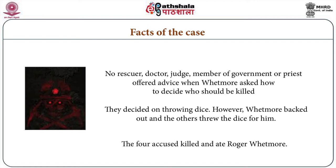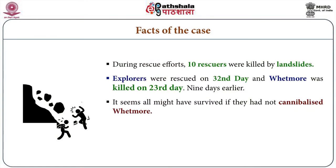When Wetmore and the others requested guidance on how they should decide which one of them should be killed and eaten, they decided they should just throw dice. But before the actual event of throwing the dice, Roger Wetmore — who had originally proposed the idea — decided he couldn't go through with it and he withdrew. But the others continued and they wouldn't let Roger Wetmore out. He had to be included, so they threw the dice for him. Unfortunately for Wetmore, the dice went at his disadvantage and he was killed and eaten by the four accused. During the rescue efforts, ten rescuers were actually killed by landslides. The four who lived were rescued on the 32nd day. Wetmore was killed and eaten on the 23rd day — nine days earlier. It seems, therefore, if the medical practitioners were correct, that all five might have survived if they had not eaten Wetmore on that day.